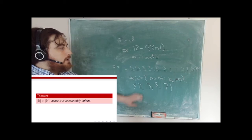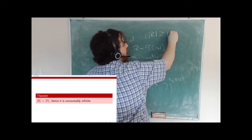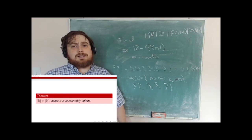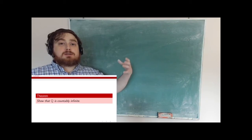We found an onto mapping from R to the power set of N, so the cardinality of R is greater than or equal to the cardinality of P(N), which is strictly greater than the cardinality of N. Hence the cardinality of the real numbers is strictly bigger than the size of the natural numbers. On the other hand, the rational numbers will be countably infinite — to show that we'll have to prove there is a bijection from the rational numbers to the natural numbers.